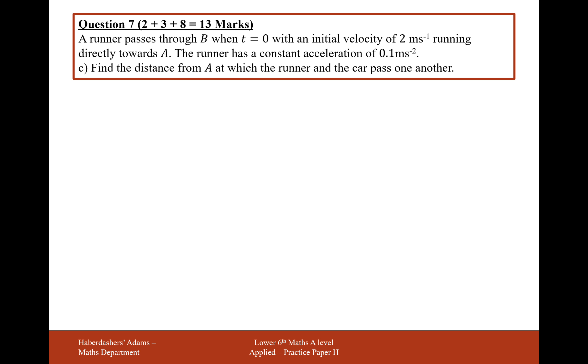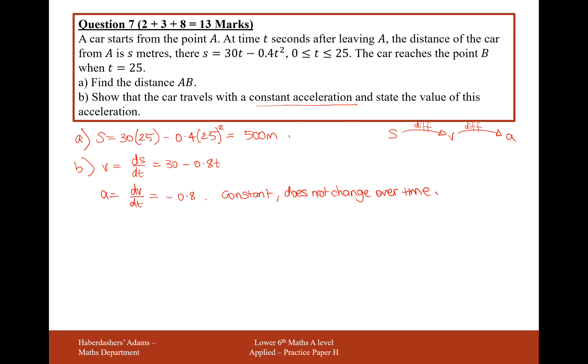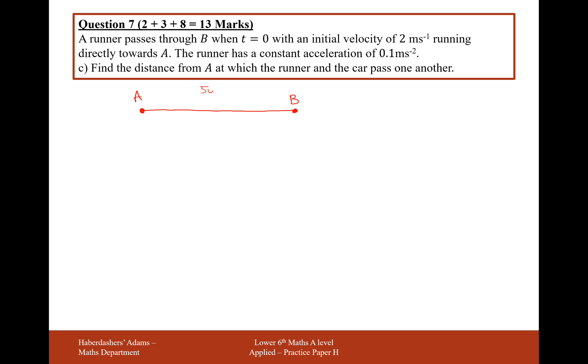A runner passes through point B when t equals 0, with an initial velocity of 2 metres per second running directly towards A. The runner has a constant acceleration of 0.1 metres per second squared. Find the distance from A at which the runner and the car pass each other. I want to draw a diagram to help us visualise what's going on. We have point A and point B, and from our previous work, the distance between A and B is 500 metres. We have a car travelling towards B and a runner running towards A.